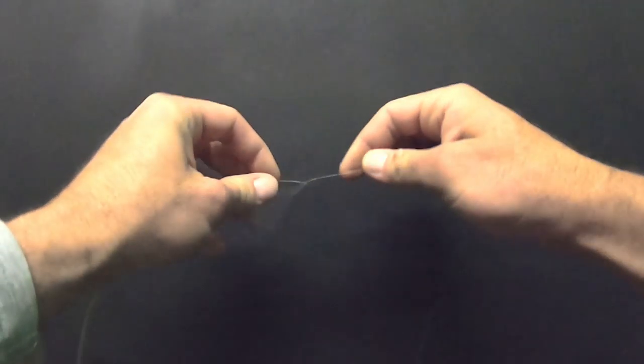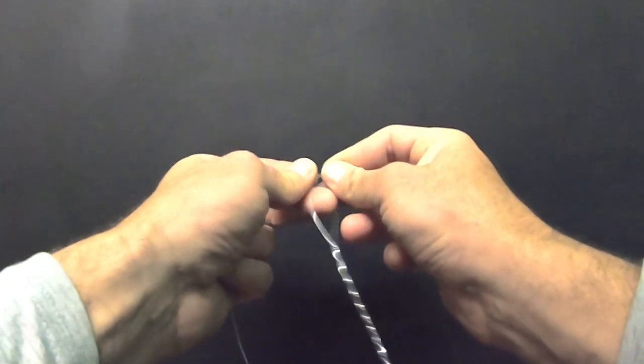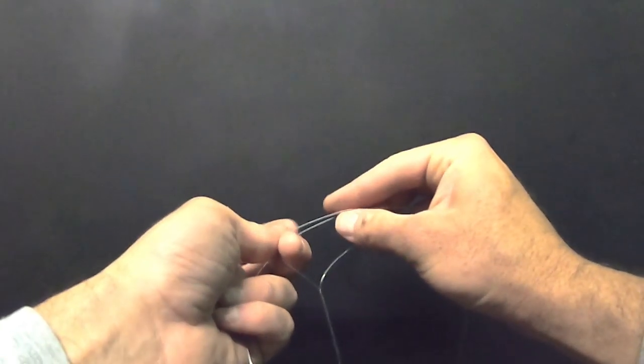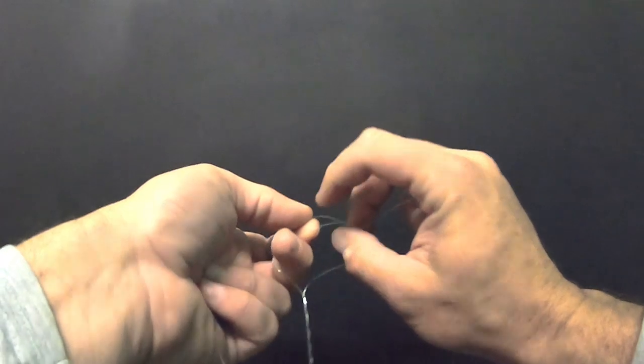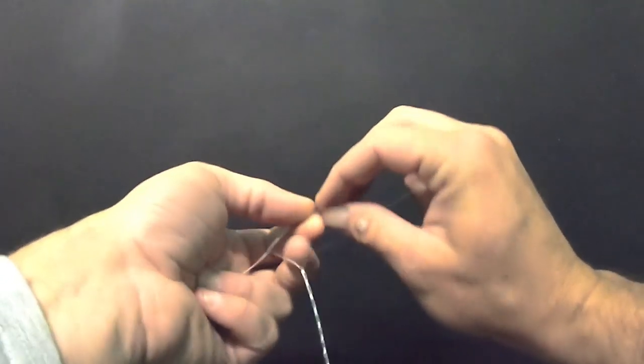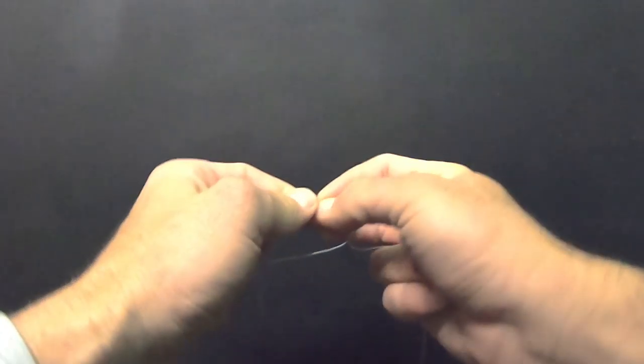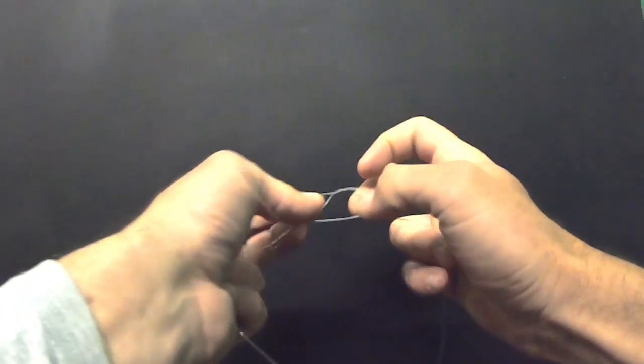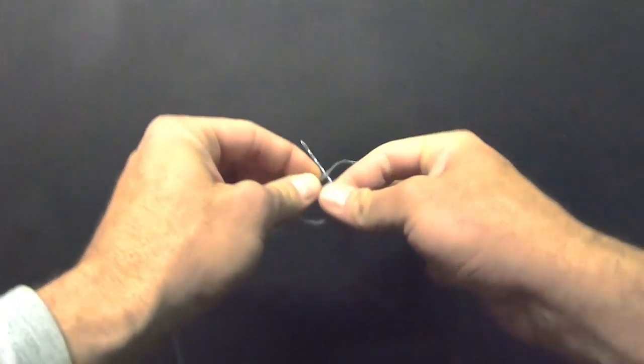Now what I do is I make a little loop in the end. Double it over and then I make six twists, which means there's going to be three turns on each side, and then through that little opening I stick this into the opening.